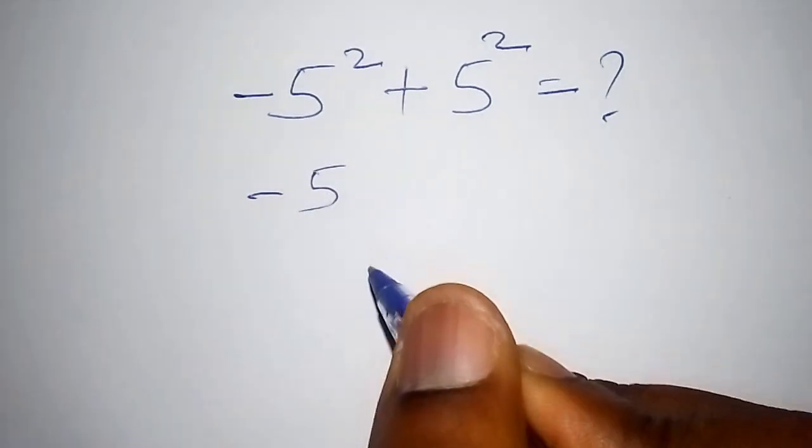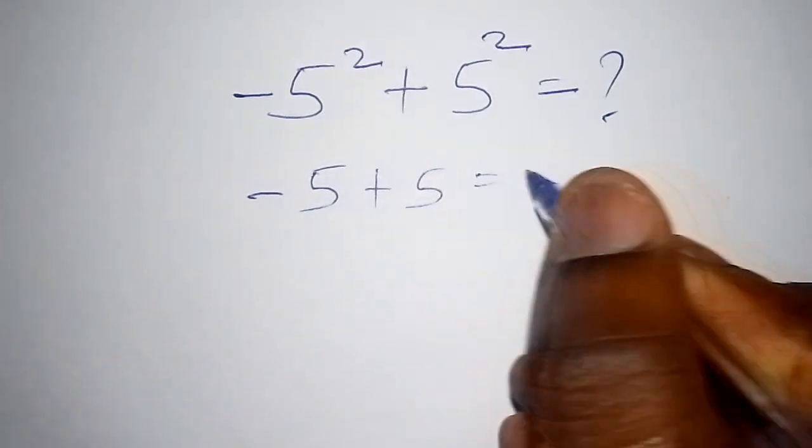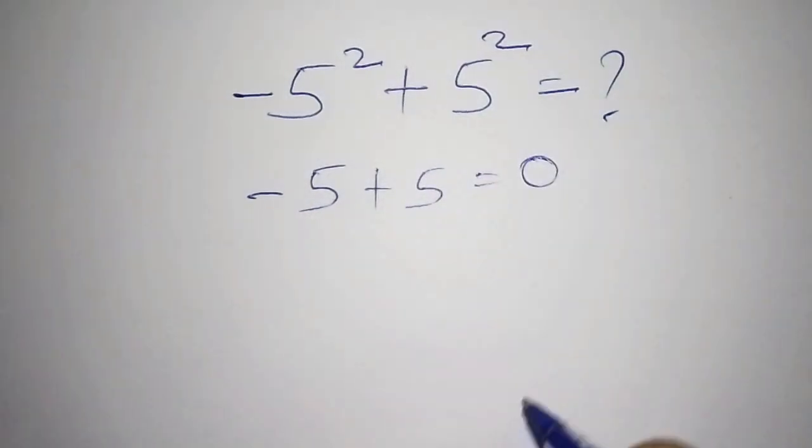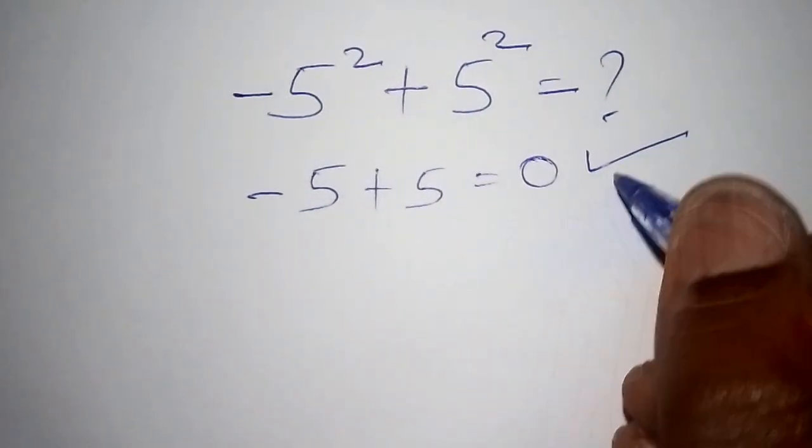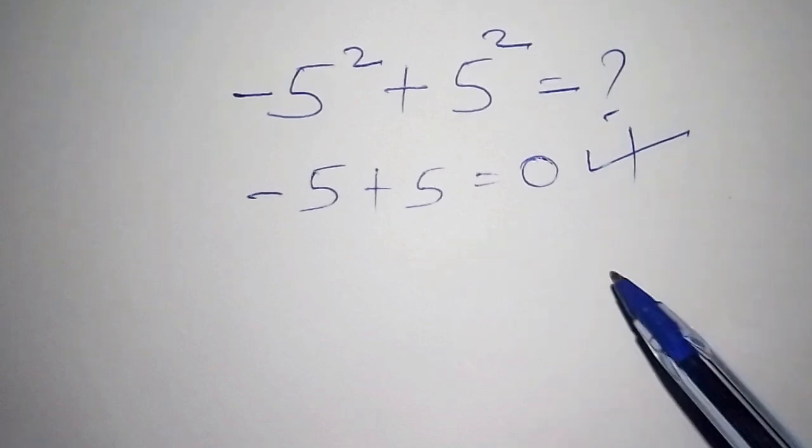The other one shall also say the powers shall cancel each other so we shall have minus 5 plus 5 and then the answer automatically becomes zero, which when you get this, the answer is not correct.